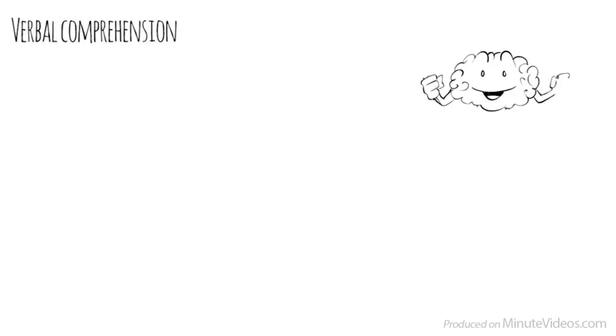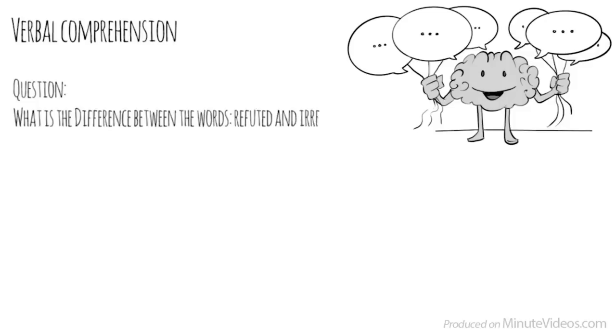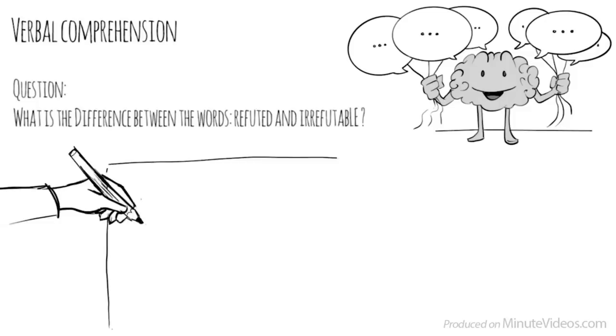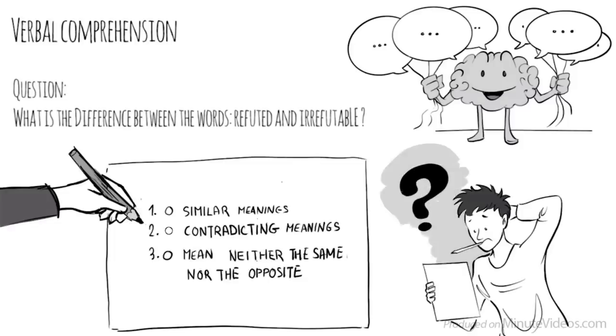The third section was verbal comprehension, which measures our ability to access vocabulary, express ourselves in a meaningful manner, and apply reasoning skills to information presented verbally. In the first question, it said, What is the difference between the words refuted and irrefutable? Do they have similar meanings, have contradicting meanings, or mean neither the same nor the opposite? They must have contradicting meanings.